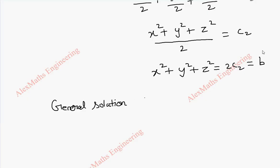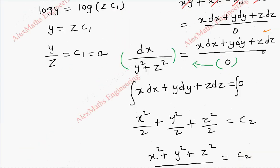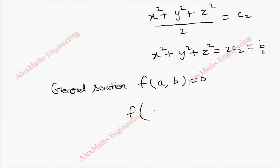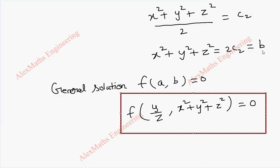Now using A and B, we are going to write the general solution. The general solution for the given partial differential equation is F of C1, C2. Since we have 2C2, we are taking it as constant B. So now replace A which is y by z, and B which is x square plus y square plus z square, equal to zero. So we got the general solution for the given partial differential equation by using Lagrange's multiplier method.